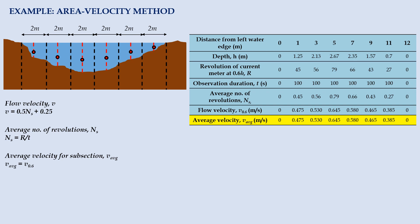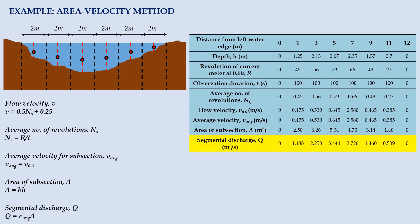Based on the field observation method, we determine the average velocity for each subsection. Subsequently, we calculate the area of each subsection. Knowing the stream discharge equals to the product of flow velocity and cross sectional area, we can then calculate the segmental discharge. The stream flow for the gauging site is a summation of segmental discharge.